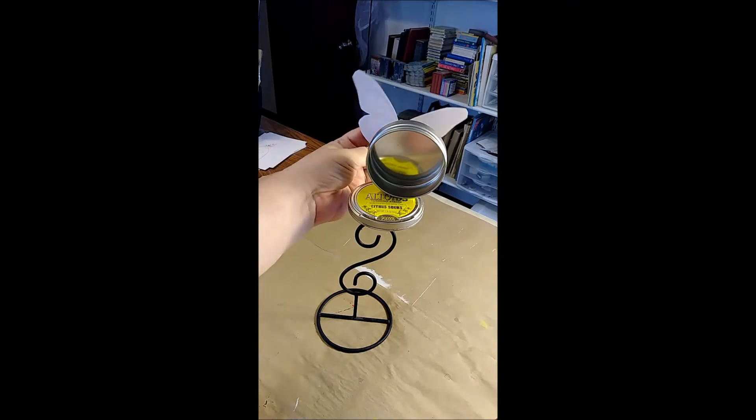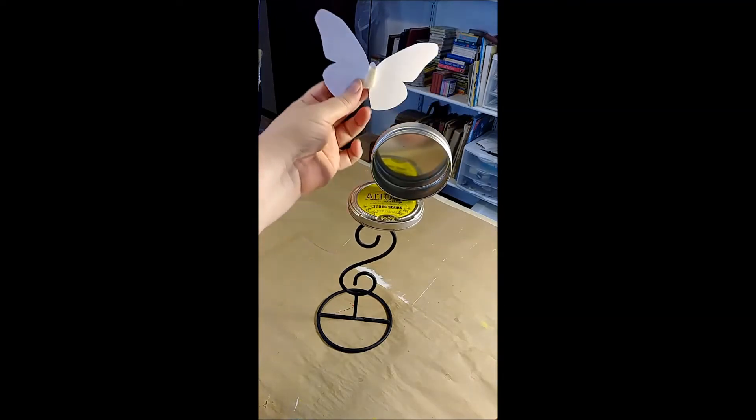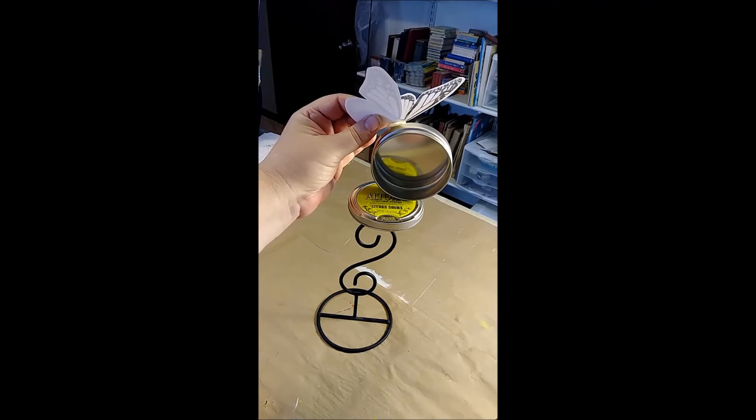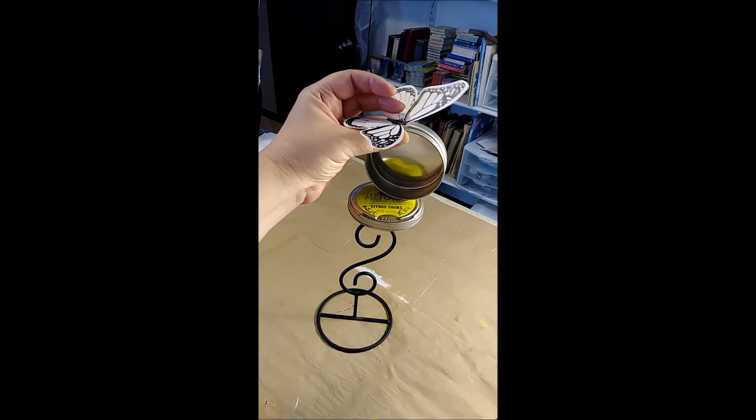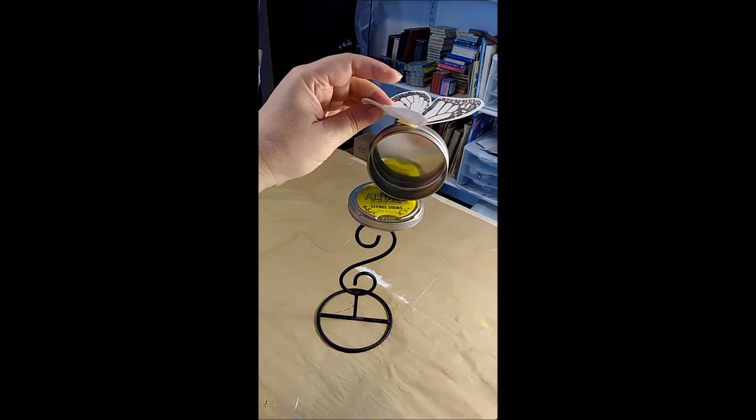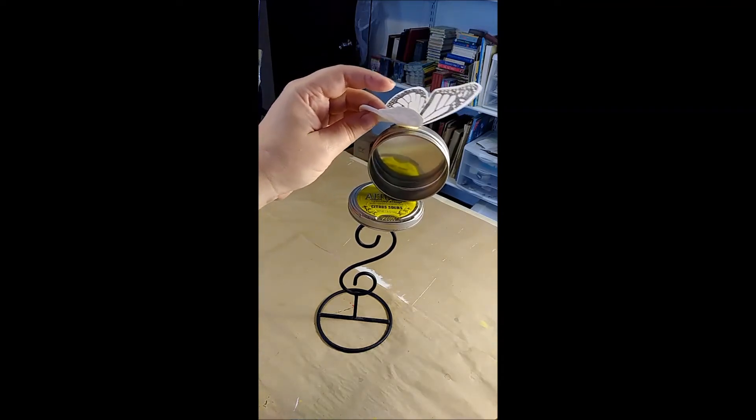And then instead of doing wings behind the tin I thought I might perch an oversized butterfly that I've painted up on top like this. Maybe not like that exactly but something like that.